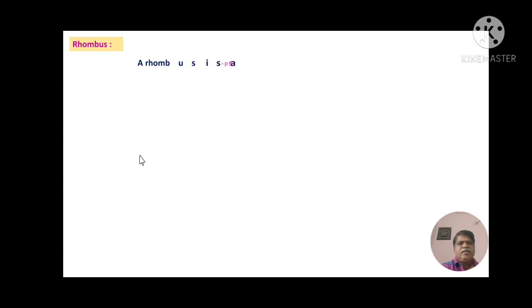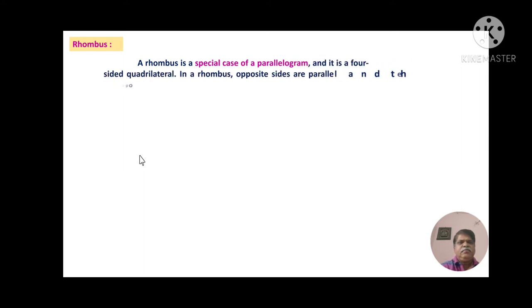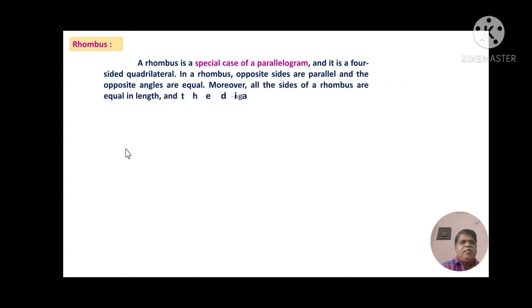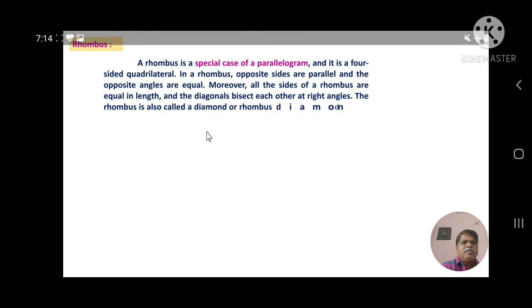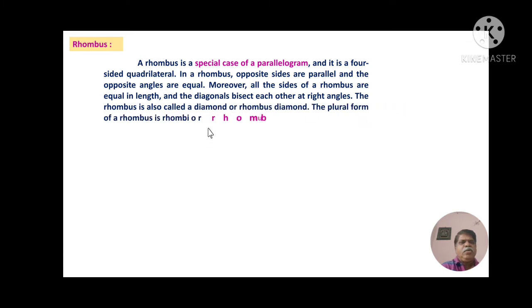Friends, what is a rhombus? A rhombus is a special case of a parallelogram. It is a four-sided quadrilateral. In a rhombus, opposite sides are parallel and the opposite angles are equal. Moreover, all the sides of a rhombus are equal in length and the diagonals bisect each other at right angles. A rhombus is also called a diamond.